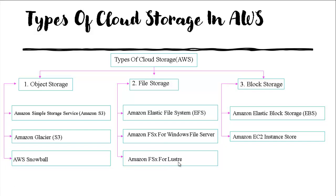If we want to use FSx services, billing will automatically start. Amazon Elastic Block Storage EBS is free tier eligible. Amazon EC2 instance store is also a cost-effective service, but if we want to configure it, that is payable.